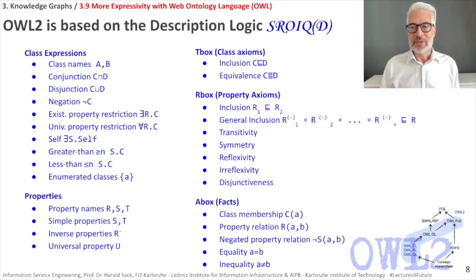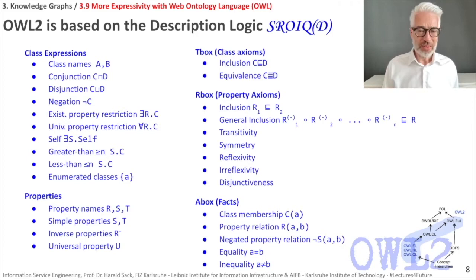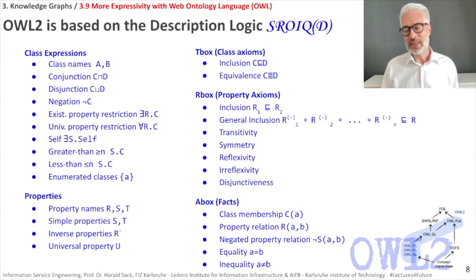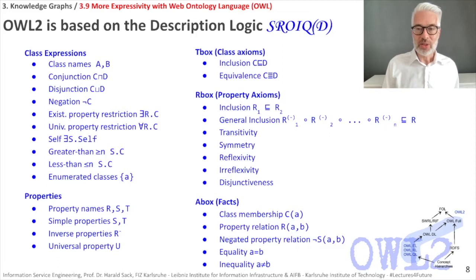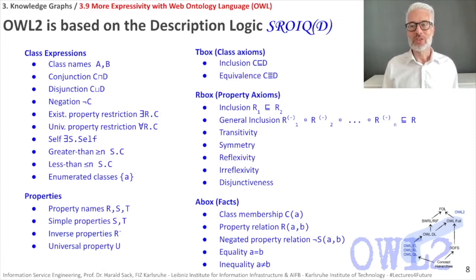Many description logics are much more expressive than propositional logic but less expressive than first-order logic. However, in contrast to the latter, the core reasoning problems for description logics are usually decidable, and efficient decision procedures have been designed and implemented for all of these kinds of problems. Now let's have a closer look at OWL 2.